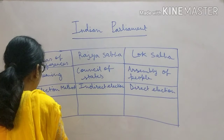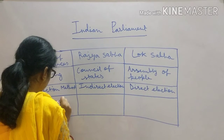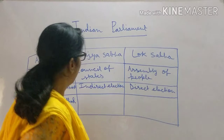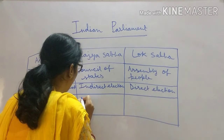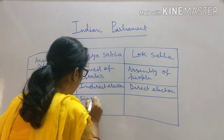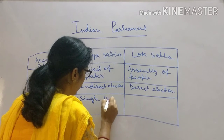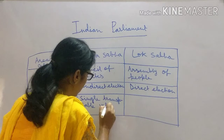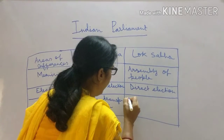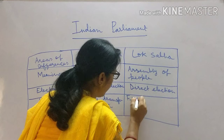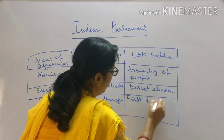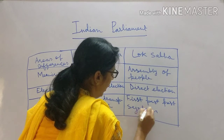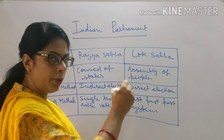Regarding the voting method: in Rajya Sabha the voting method is the Single Transferable Vote. In Lok Sabha, the voting method is the First Past the Post system, meaning whoever gets the majority of votes is declared the winning candidate.